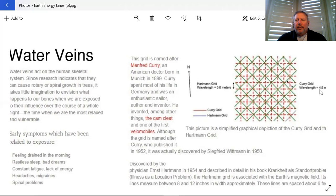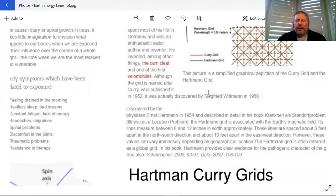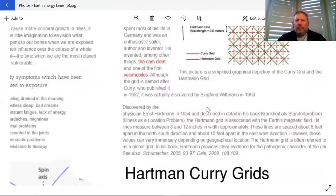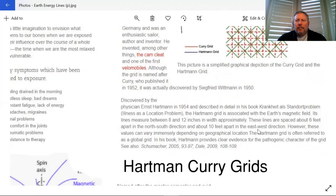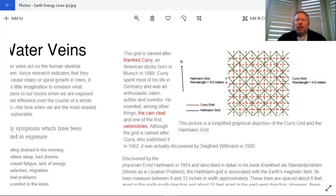The idea of where this came from, this was discovered in the 1950s for the Curry grids and in 1954. Ernst Hartman was a physician and he saw some evidence of cancers in Germany. He wanted to see if it was a localized issue and maybe what were the environmental issues that may be causing those cancers. So they developed this idea of the Hartman grid and we have the Curry grid.